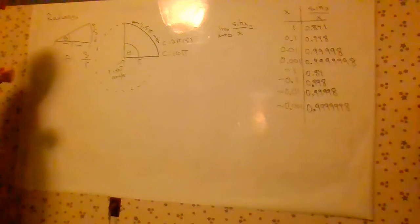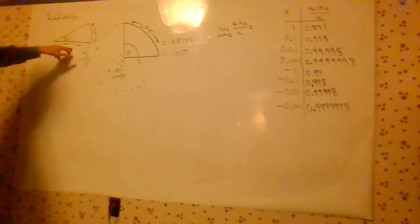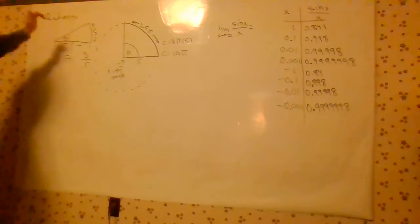We take a sector of a circle. S we call arc length, that's the length around here. R is radius, theta is the angle. Theta is equal to S over R, it's just a ratio of arc length to radius.